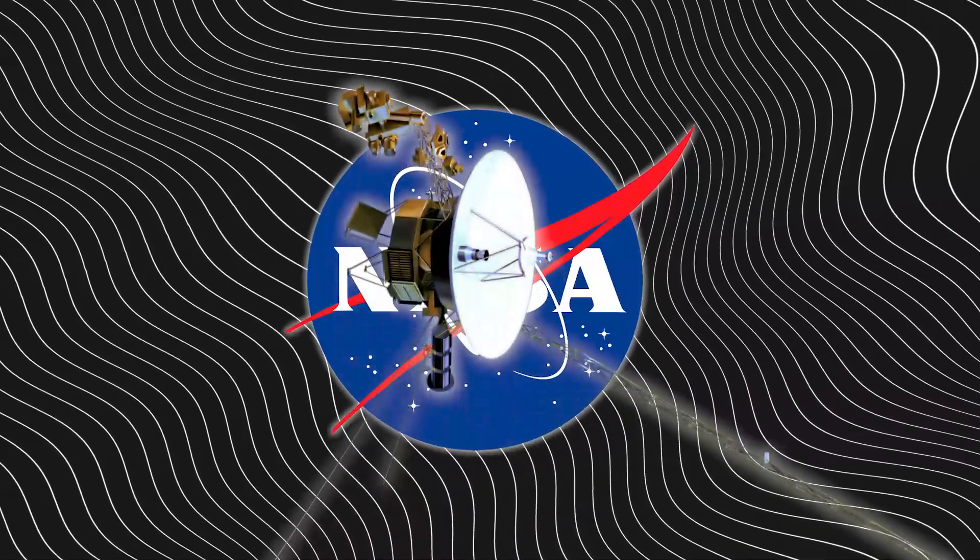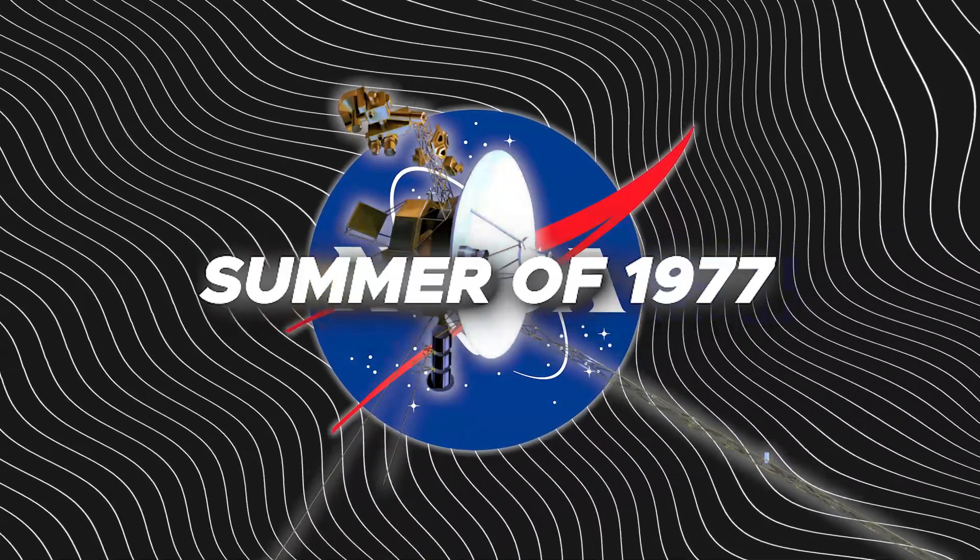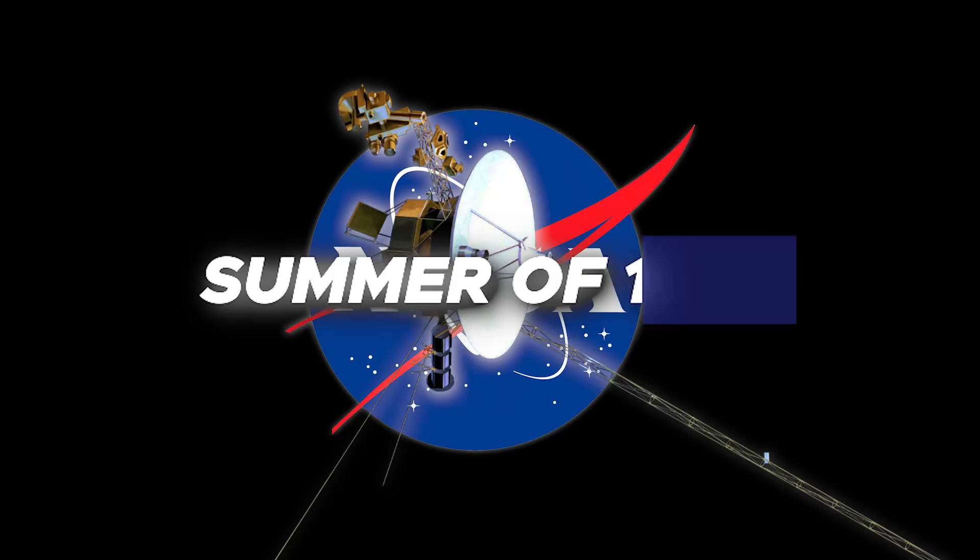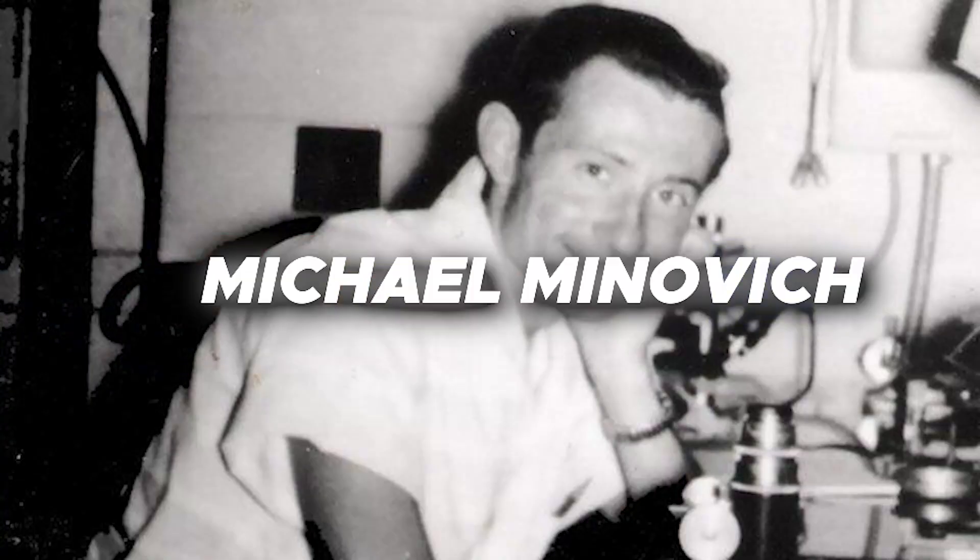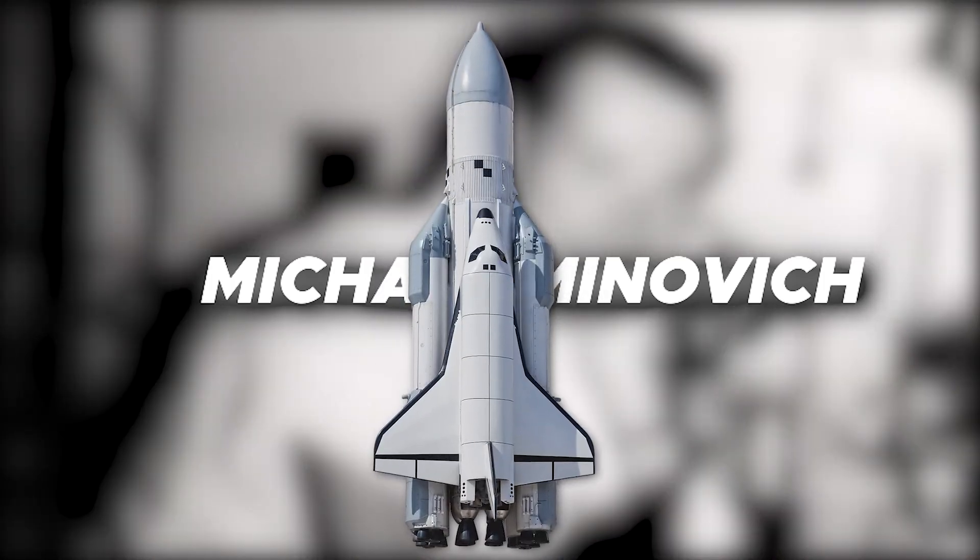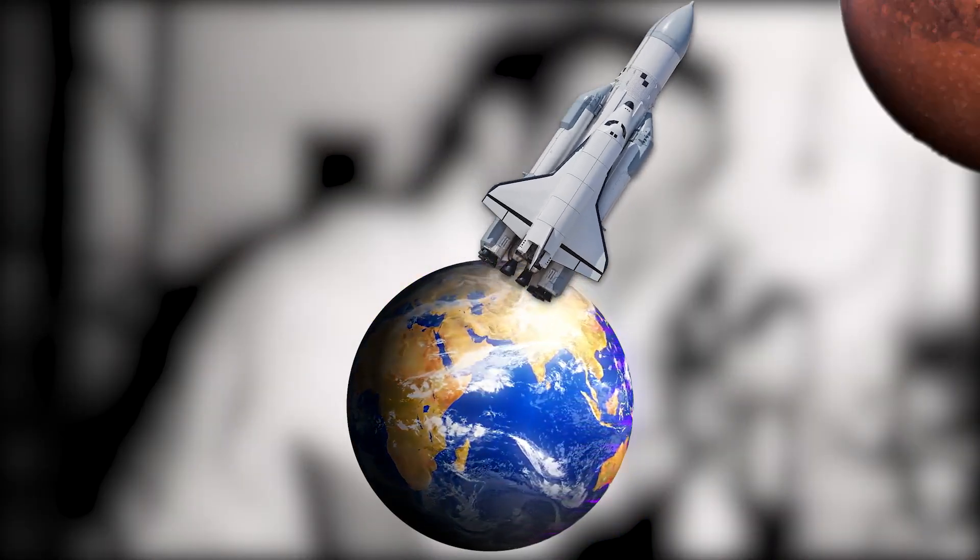NASA originally thought the Voyager mission would only last five years when it launched in the summer of 1977. The idea for the mission came about by accident, when Michael Minovich discovered that a spacecraft could use a planet's gravity to travel further into space.